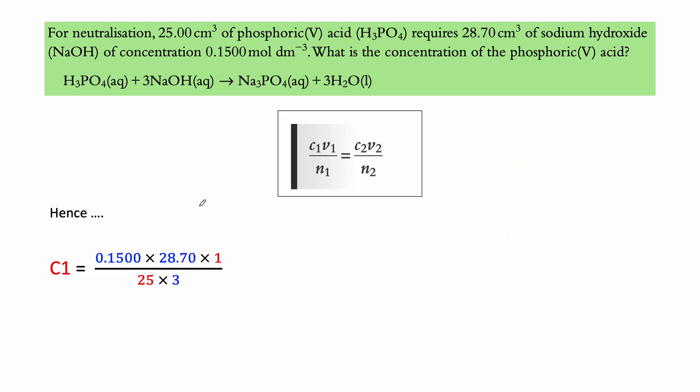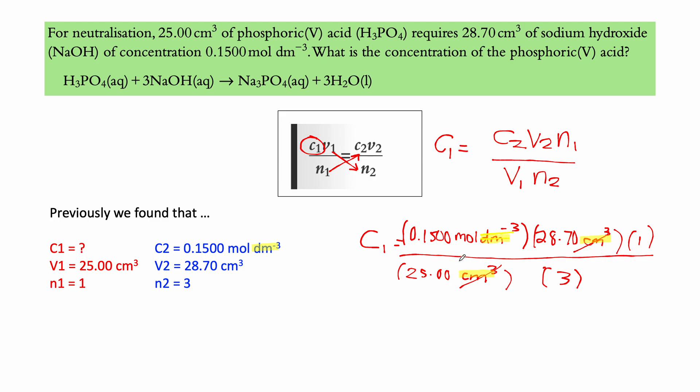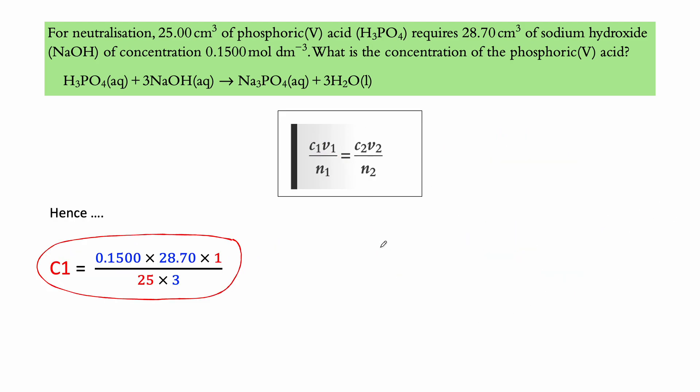So we've determined this formula, previously this one here from here, although it's kind of messy, but yeah. And basically with this, we can just solve for C1, doing some simple math and we get that the concentration of the phosphoric acid is 0.0574 mole DM3, mole per DM3, mole per liter.